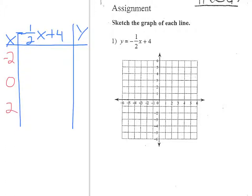Now this is where you could use your calculator because you have fractions. If I plug negative 2 into this x, I have negative 1/2 times negative 2 and then plus 4. These 2's cancel and these negatives cancel, giving me positive 1. And then 1 plus 4 gives me 5. So this ordered pair is negative 2, 5.